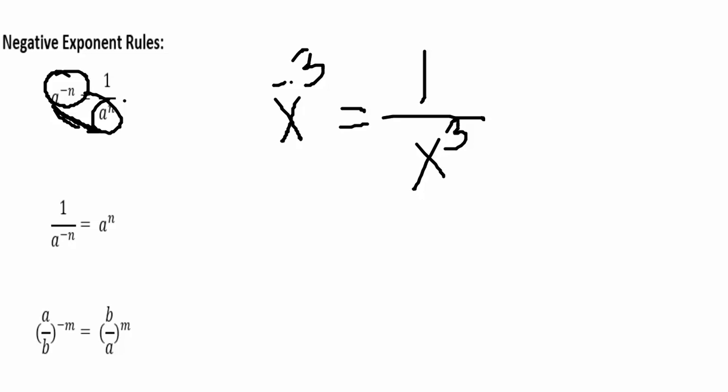One thing I've found helpful in keeping these negative exponent rules straight is to think of them in terms of fractions. Anytime you're looking at a negative exponent, think of it as a fraction. For example, x to the negative third — if I wanted this to look like a fraction, I can put it over 1. Whenever I had a negative exponent, the rule always told me to flip that exponent to the other side. If it was negative in the numerator, I brought it down to the denominator, and we're going to see that's true for the opposite case too.